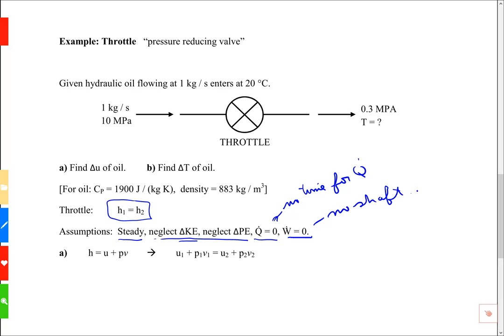To find the internal energy we're going to use the definition of enthalpy. Enthalpy is a defined property. Enthalpy is defined to be the internal energy plus the pressure times the specific volume. So if I use the fact that the enthalpy is unchanged I could write U1 plus P1 V1 equals U2 plus P2 V2.